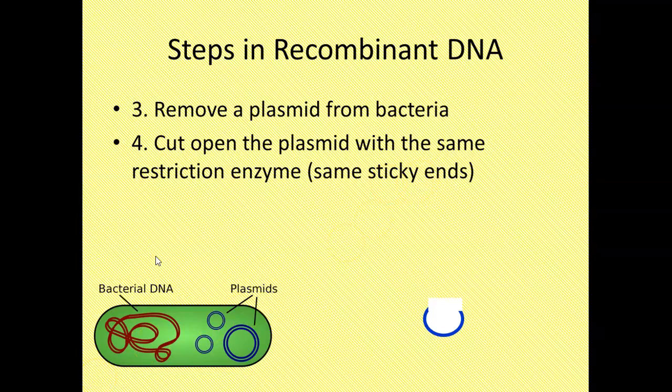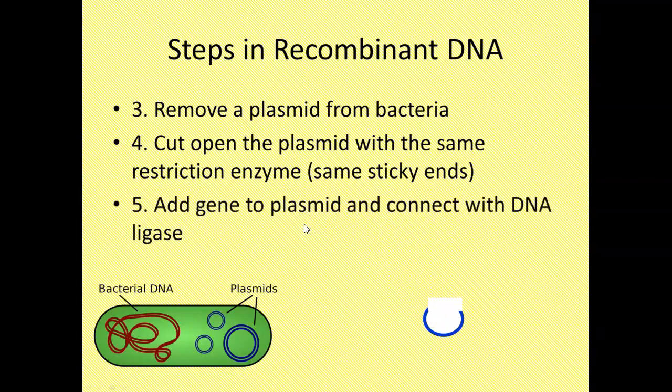So if you flip back a couple of slides or rewind this a little bit, you'll see that the ends were AATT. So this has AATT and so does the gene that we chopped off. So now all we have to do is take the gene, put it in contact with the plasmid, and those A's and those T's will naturally attach to each other. They'll lock in place.